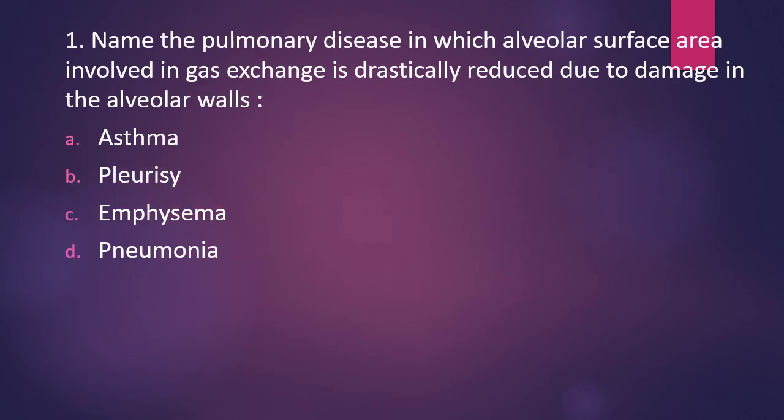Question number one: name the pulmonary disease in which the alveolar surface area involved in gas exchange is drastically reduced due to damage to the alveolar walls. The options are asthma, pleurisy, emphysema, or pneumonia. The correct answer is option C, emphysema. In emphysema, the surface area of the alveoli is drastically reduced, and the major cause of emphysema is smoking.